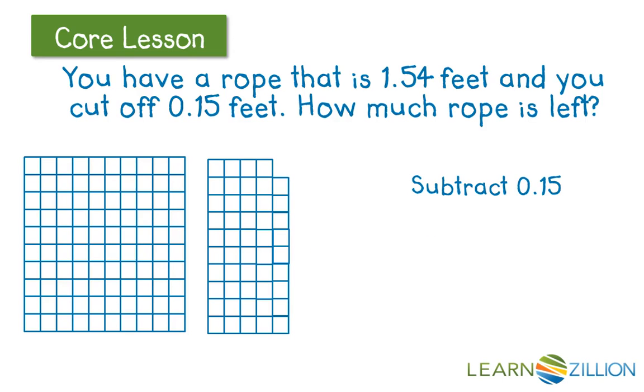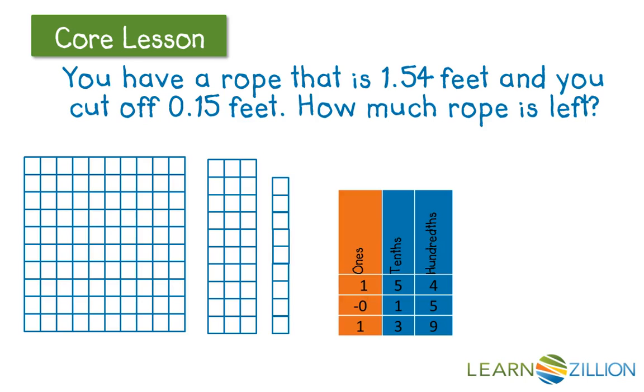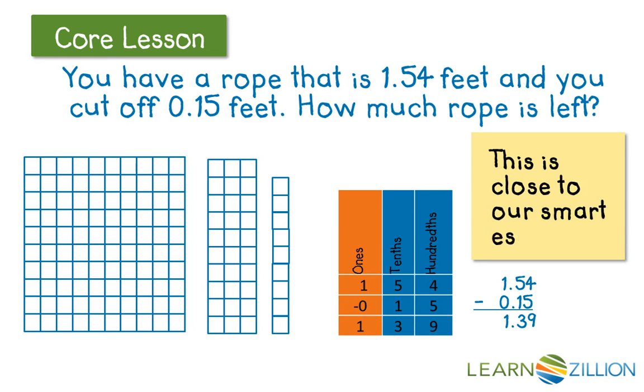I can then go ahead and subtract my 5 hundredths. I'm ready to subtract my 1 tenth. And I can see in my answer that I have one whole unit, 3 tenths, and 9 hundredths left. You'll often see it like this. This is close to our smart estimate, so it's a reasonable answer.